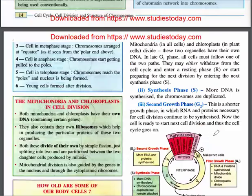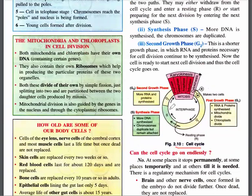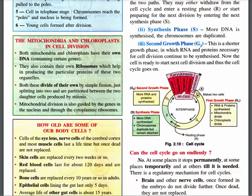The cell cycle has four phases: G1 phase — the first growth phase where RNA and proteins are synthesized and mitochondria and chloroplasts divide; S phase — synthesis phase where DNA is synthesized and chromosomes duplicate but remain attached; G2 phase — second growth phase with more RNA and proteins synthesized; and M phase — mitosis.